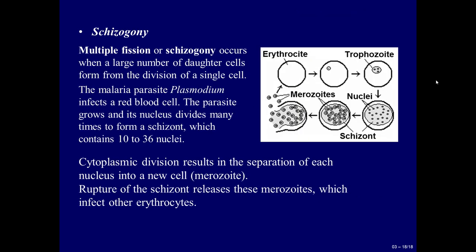Schizogony: multiple fission or schizogony occurs when a large number of daughter cells form from the division of a single cell. The malaria parasite Plasmodium infects a red blood cell. The parasite grows and its nucleus divides many times to form a schizont, which contains 10 to 36 nuclei. Cytoplasmic division results in the separation of each nucleus into a new cell, called a merozoite. Rupture of the schizont releases the merozoites, which infect other erythrocytes.